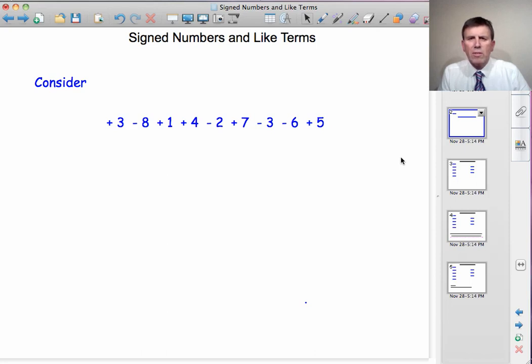I'm going to work my way along the line from left to right to find out what the answer is. Plus 3, take away 8, gets me down to minus 5. Minus 5, plus 1, is up to minus 4. Minus 4, plus 4, is up to 0. 0, take away 2, is down to minus 2.